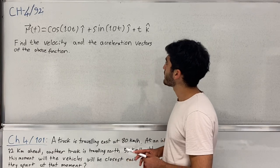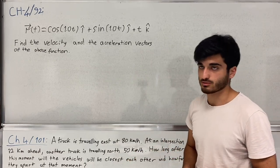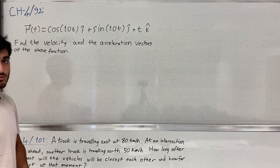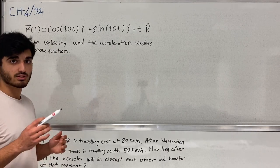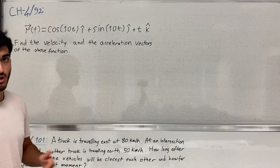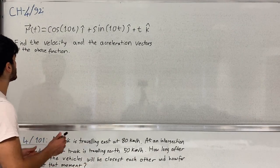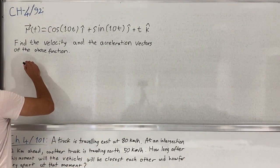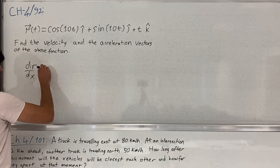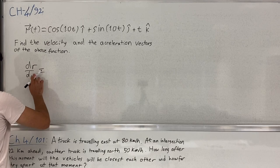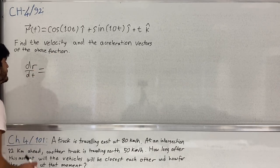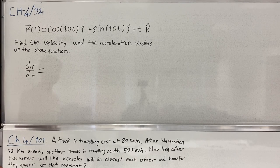The first question says: find the velocity and acceleration vectors of the given position vector function. The position vector is the integral of the velocity vector, so if I take the derivative of the position vector with respect to t, I will obtain the velocity vector. Let's do the derivative — dr over dt equals...